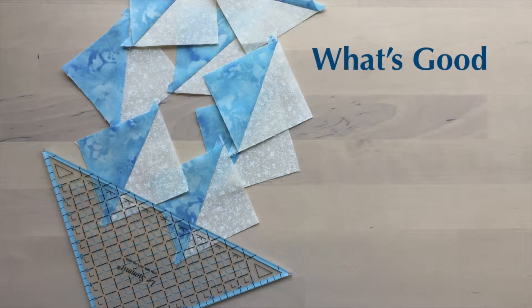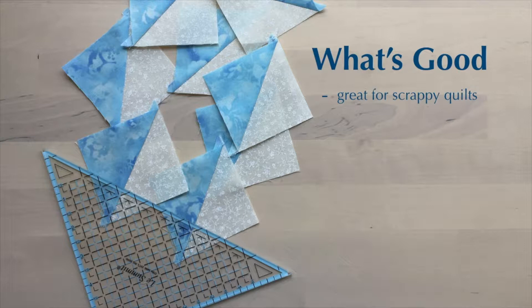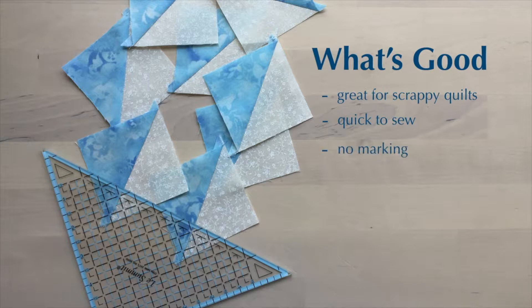So what's good about this method of making half square triangles? It is excellent for scrappy quilts when you're cutting from lots of odd sizes of fabric scraps. It is quick to sew, just use your regular quarter inch seam allowance. It doesn't require you to do any marking. If your cutting and stitching is accurate it doesn't require any trimming or squaring up.